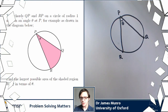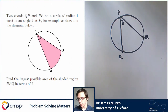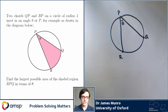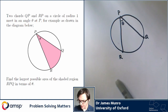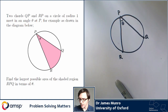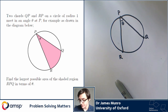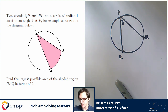We're given two chords, PQ and PR, and we're told that they make an angle of theta and we'd like to maximize the shaded area between those two chords. When I see a new problem like this, when I haven't really got a way in, I like to imagine what would happen for particular values of theta — try out special values and see if I can generalize from there.